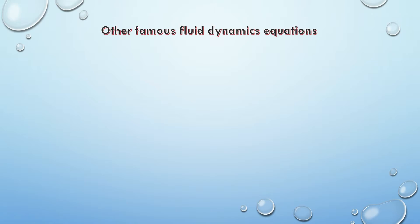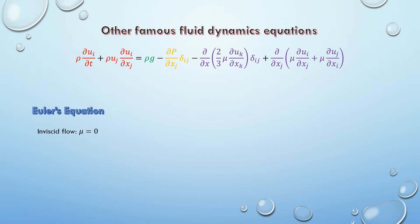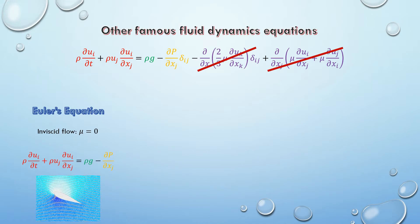There are other famous fluid dynamics equations that we can relate to the Navier-Stokes equation, by applying certain assumptions or simplifications. We have the Euler's equation, which is used for inviscid flow, so the viscosity is zero, and so are the terms containing μ. This is the Euler's equation, which is often used to simulate, for instance, air flow, because air has very little viscosity.